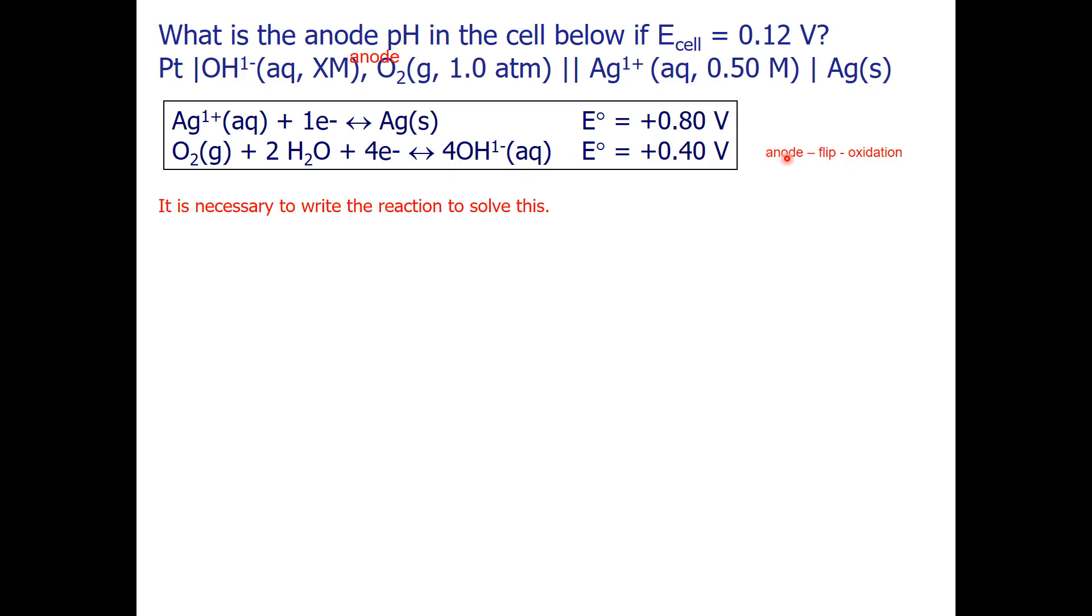When I go to add these reactions, I'm going to flip the anode because an oxidation occurs. My second compartment deals with silver ion and silver, so this will be my cathode reaction and I will write it as is.